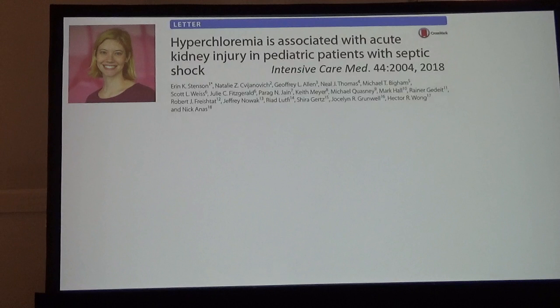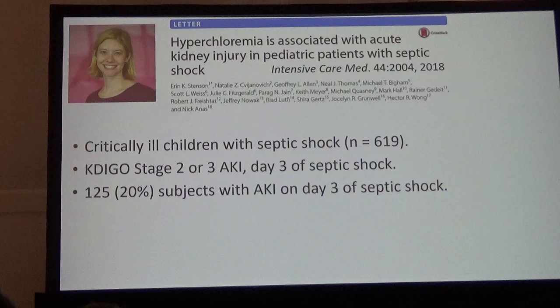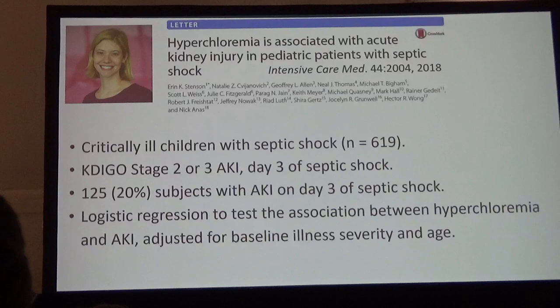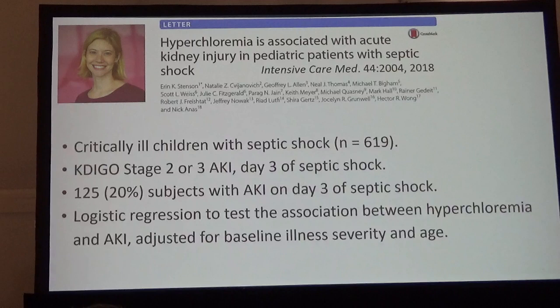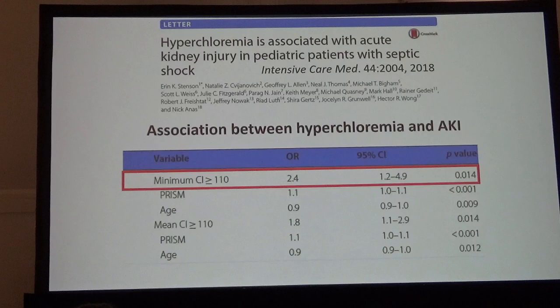Erin also looked at kidney injury — a little over 600 kids. We looked at KDIGO stages 2 or 3 on day three of septic shock. 125, or about 20%, of these kids met criteria for AKI on day three. Using logistic regression and adjusting for both severity of illness and age, she found an association: minimum chloride greater than 110 was associated with increased risk of AKI on day three — stage 2 or 3 — as was the mean chloride.